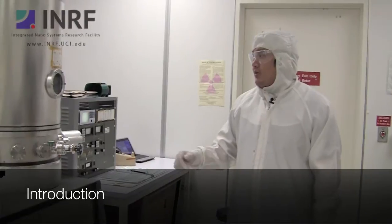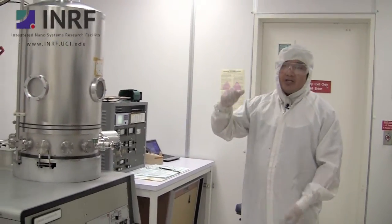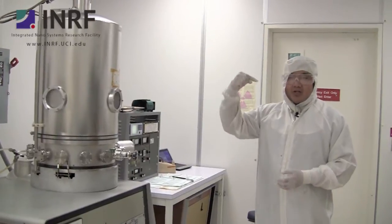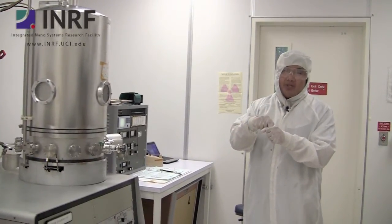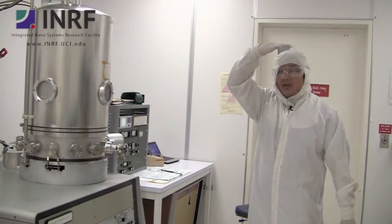This is the E-beam. It is used to deposit metal or even silicon dioxide onto your substrate. What it does is it uses a ledger gun to heat your sample material and that will evaporate onto your substrate in your sample up here.